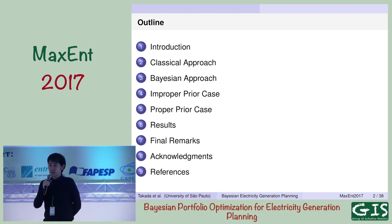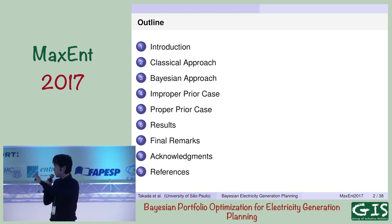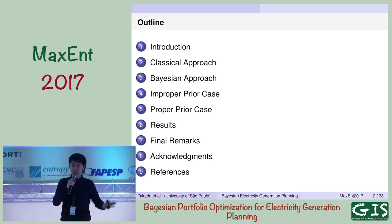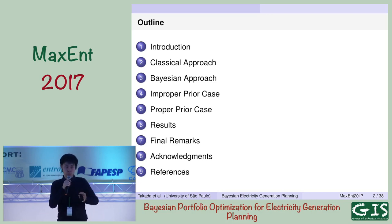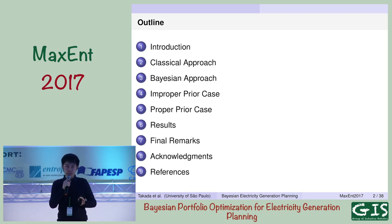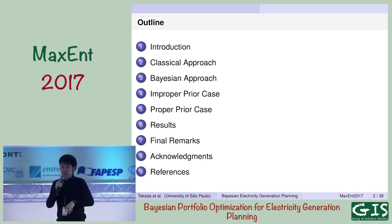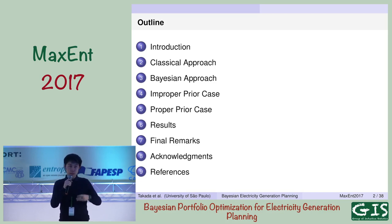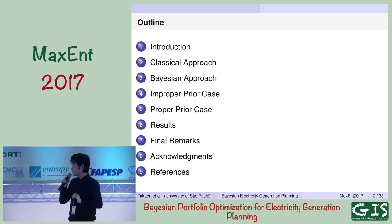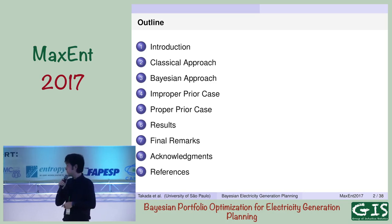We are going to discuss a brief introduction to the problems involved in this context, then the classical approach — not classical in the sense of being opposite to Bayesian, but the standard one in terms of asset allocation methodologies. Basically, the papers in the literature use the mean-variance approach. Then the Bayesian approach. Since the idea is just to introduce the concept in the energy planning context, I'll show two very simple applications: one using an improper prior case and one using a proper prior case, to show the flexibility of the methodology and to demonstrate to energy policy makers the possibility of using this tool in their decision-making process.